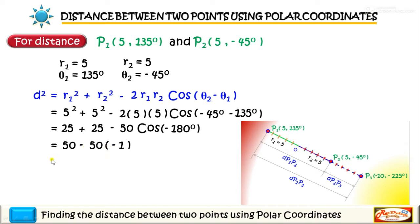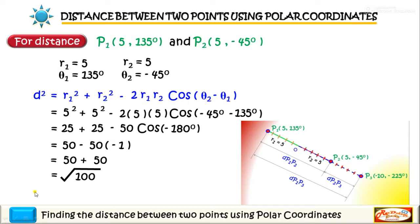So we have 50 minus 50 times negative 1, which gives us positive 50. So we have 50 plus 50 is equal to 100. Getting the square root, the distance from P1 to P2 is equal to 10 units.